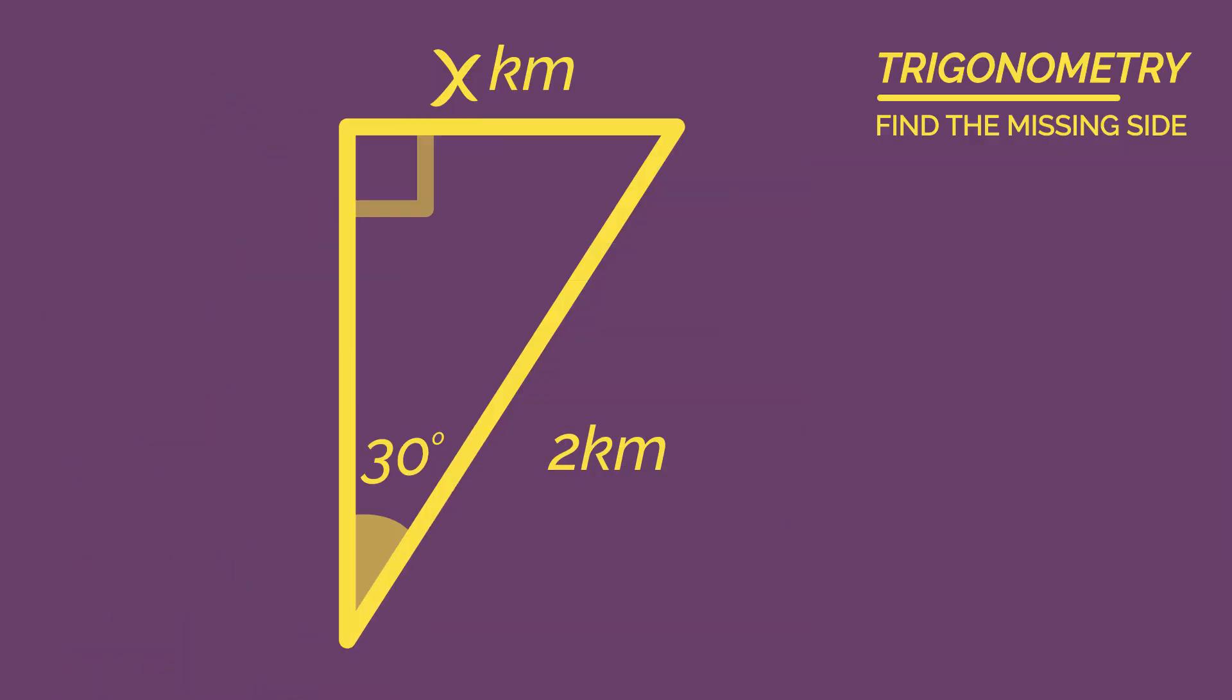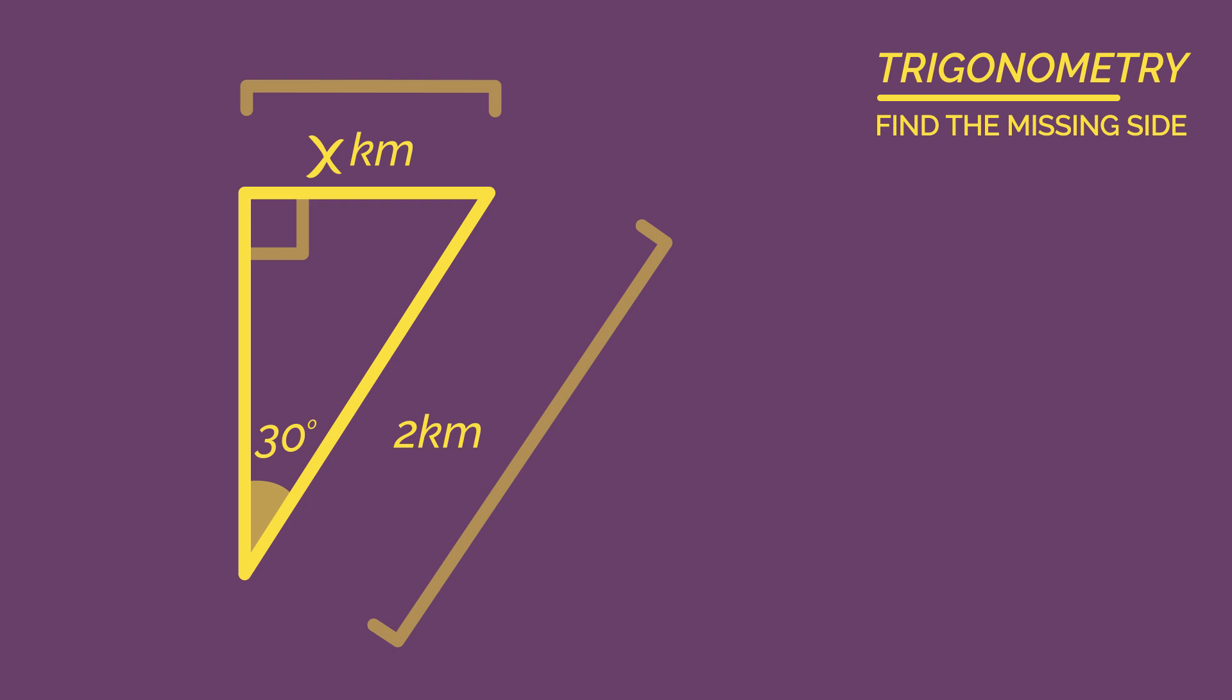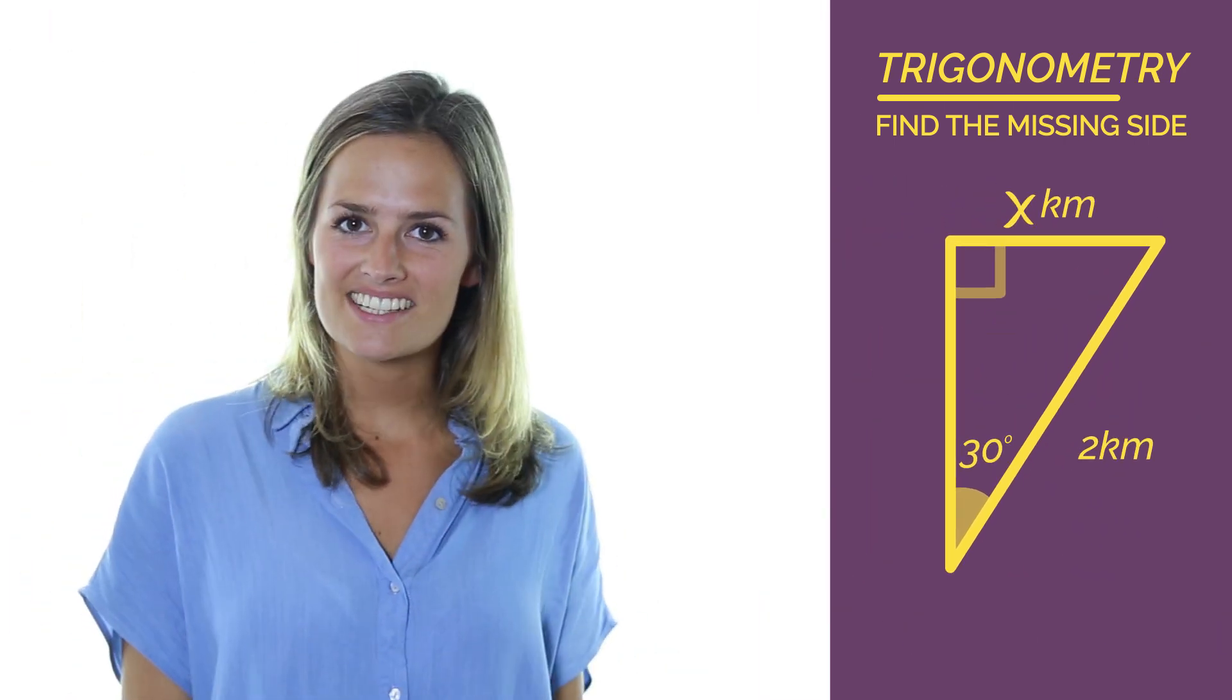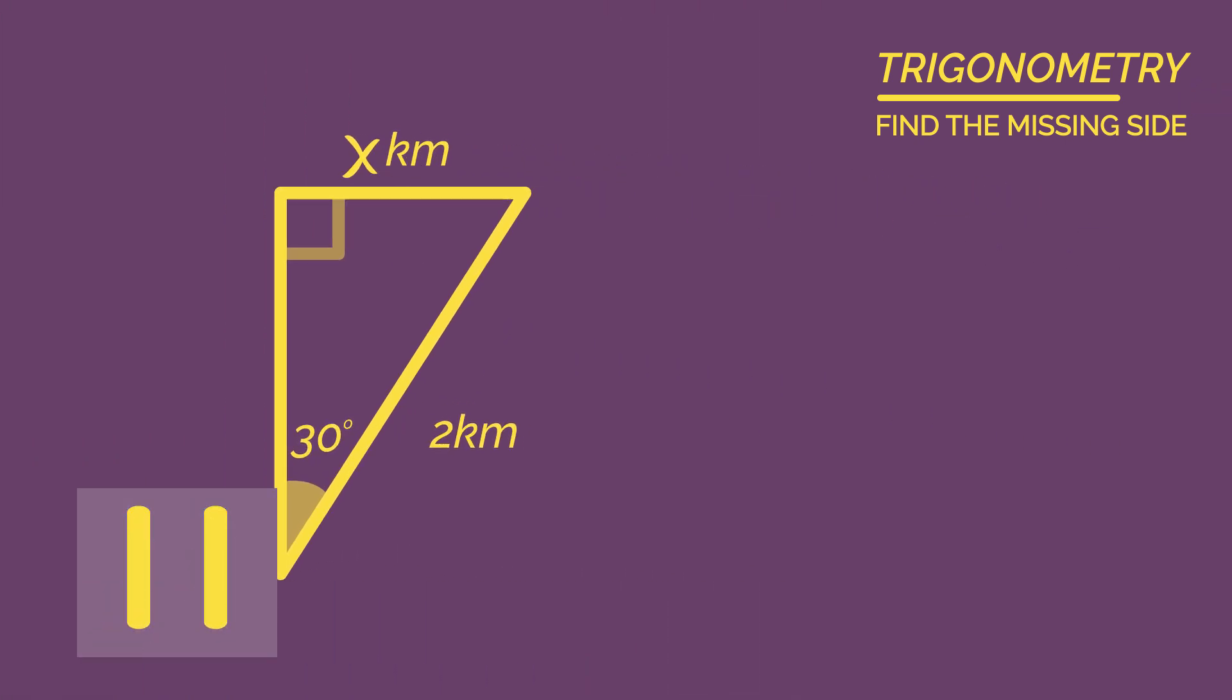So let's now put SOHCAHTOA to use. Start by labelling the sides. So what do we call the two kilometre side? And what do we call the x side? Pause the video and have a think. Click play when you're ready to check.